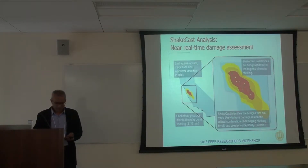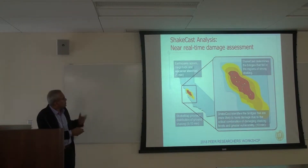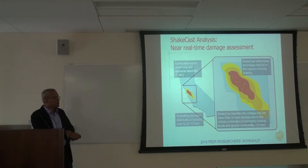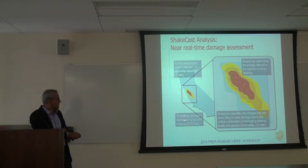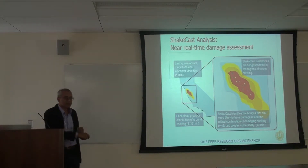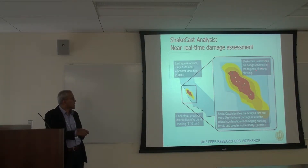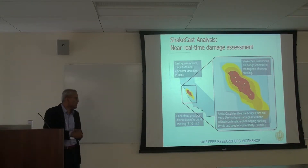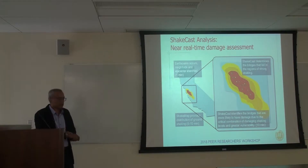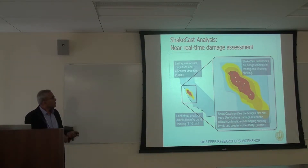I'm going to go over the workshop itself and talk quickly about ShakeCast for those of you who may not be that familiar with it. What happens as soon as an earthquake occurs: ShakeMap, which is part of USGS, quickly provides a distribution of the ground shaking within a few minutes of the earthquake. ShakeCast then determines which bridges fall into the categories of that shaking and identifies bridges that are most likely to be damaged, so Caltrans can send crews to those vulnerable sites. That's the overall goal of ShakeCast.